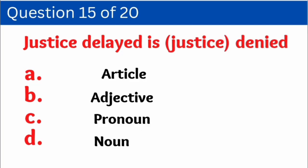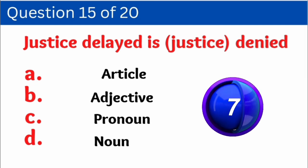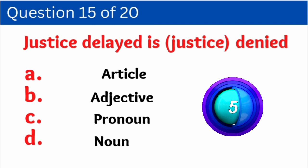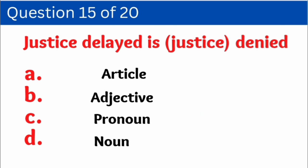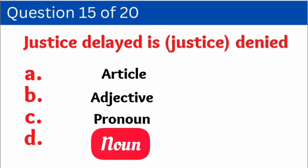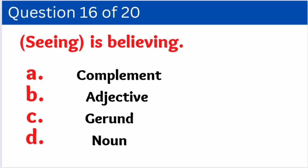Question number fifteen: 'Justice delayed is justice denied.' This means getting justice late is equal to not getting it at all. Here we have to identify how 'justice' is used. Options: A. Article, B. Adjective, C. Pronoun, D. Noun. The correct answer is option D — Noun. Justice is an abstract noun.